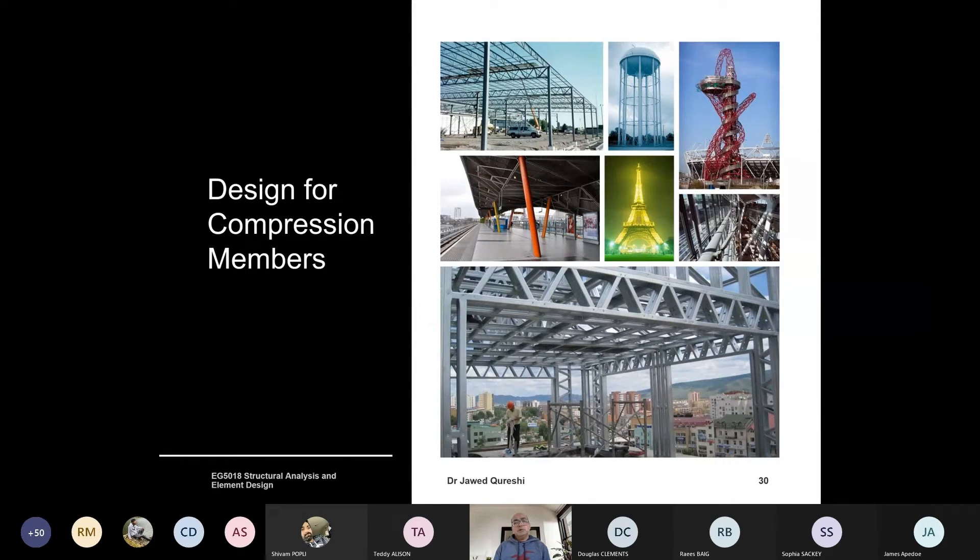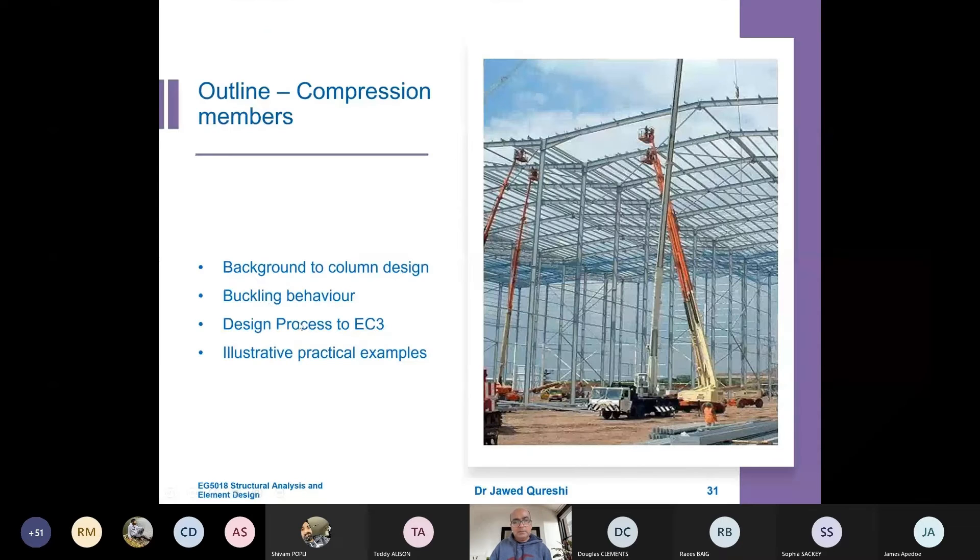My next stage is to design columns and see what is meant by flexural buckling. I'm saying design of compression members because they're not only used as columns but in a variety of ways—as members in trusses, in towers. A few examples here are Stratford DLR station and Heathrow Terminal 5, where you'll see these elliptical columns. Some clients prefer columns that look beautiful for their aesthetic beauty. Columns can be of any section. This is the outline: background to column design, buckling behavior, design process to Eurocode 3, and then some illustrative examples.